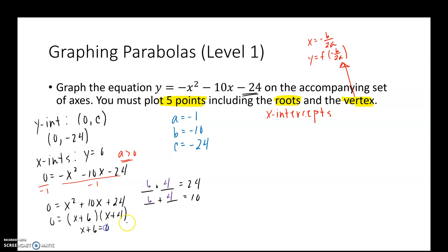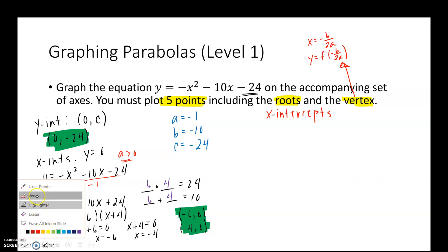But I'm not finished here because intercepts are points. So I set each individual factor equal to 0 and solve for x. So I get x is equal to negative 6 and I get x is equal to negative 4. Okay, so my ordered pairs, because I have to graph. Alright, so I have my x-intercepts. I have my y-intercepts.